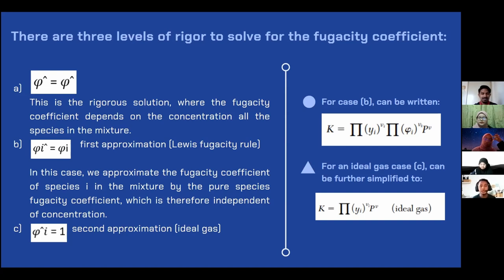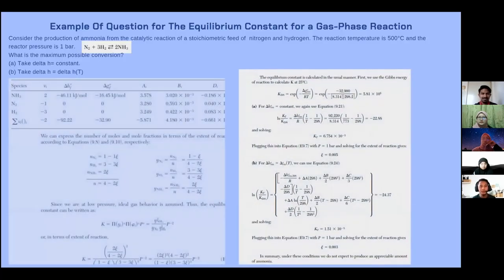For case B, it can be written as below equation to find the K. For an ideal gas, case C can be further simplified to this particular equation for ideal gas. That's all from me.